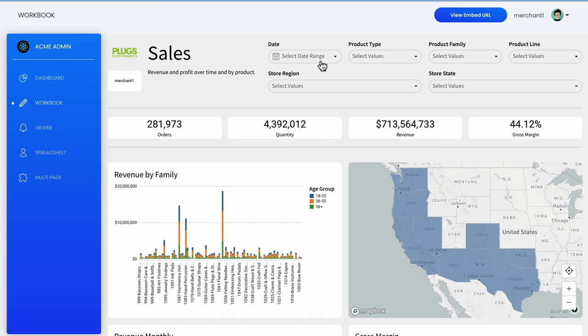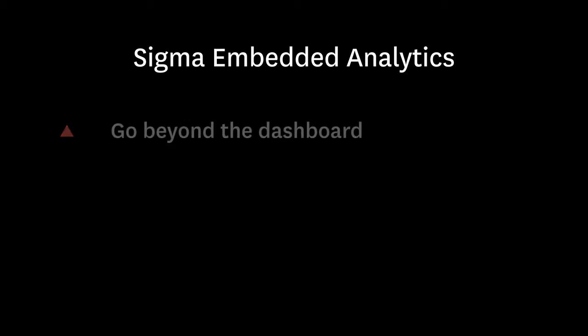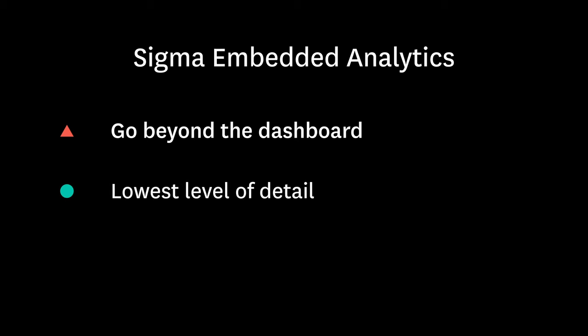Most traditional BI tools stop here with embedded dashboards, but not Sigma. Viewers can optionally click through a dashboard visualization to view and explore the live raw data powering it. Sigma's spreadsheet-like interface gets to the lowest level of detail for more data exploration and analysis to answer more questions.